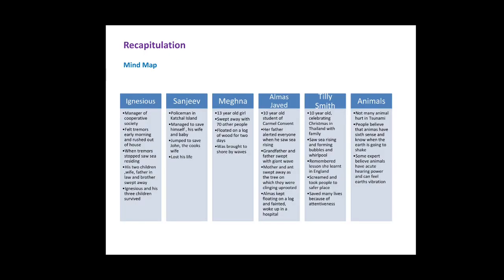For recapitulation, I will use a mind map highlighting the life events of all characters in the chapter. Ignatius, a manager of a cooperative society, felt tremors early morning, rushed out of his house, and when tremors stopped he saw the sea rising. His two children, wife, father-in-law, and brother were swept away; Ignatius and his three children survived. Sanjeev, a policeman in Kachal Island, managed to save himself, his wife, and baby, but jumped into the sea to save John the cook's wife and lost his life.